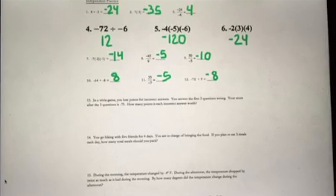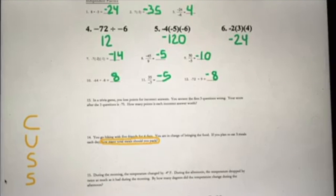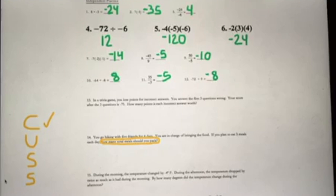Before I hop into it, I want to remember our annotation strategy, which is CUS. That's going to help us properly annotate the problem so we can make sure we're actually answering what it's asking for. A lot of students just hop in and start reading — we are suggesting you go straight to that question and circle it so you know what you're trying to answer. So we're trying to figure out: how many total meals should you pack?